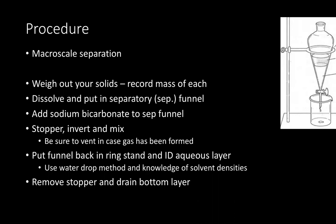After you've finished mixing the two layers together, put the separatory funnel back in the ring stand, let the two layers separate, and do a careful analysis to identify the aqueous layer. Remember you can use the water drop method, or use your knowledge of solvent densities — that information should be in your lab book. After correctly identifying your aqueous layer, remove the stopper and drain the bottom layer, or whichever layer you're trying to isolate.